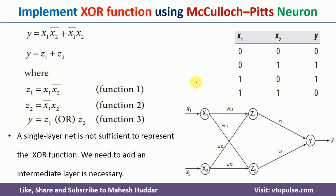The final neuron looks something like this. X1 and X2 are the inputs; Z1 and Z2 are the intermediate nodes, and Y is the output node. We have assigned weights W11, W12, W21, and W22 for the input neurons, and V1 and V2 are the weights with respect to Z1 and Z2 respectively. We need to identify the optimal weights and the threshold value.